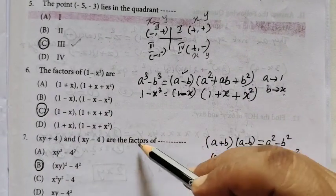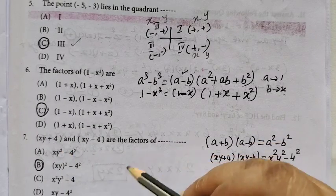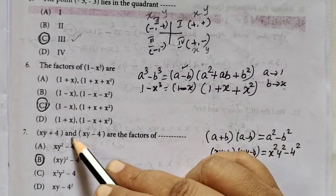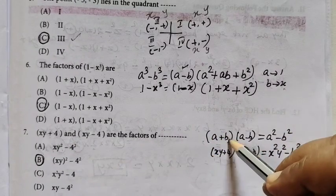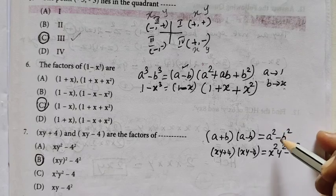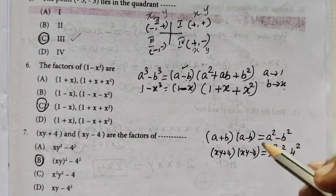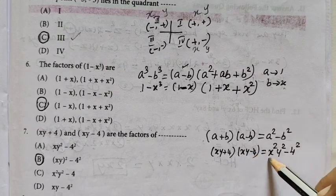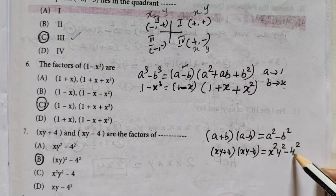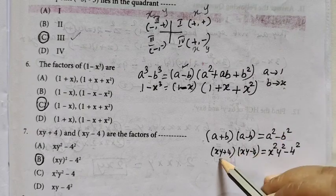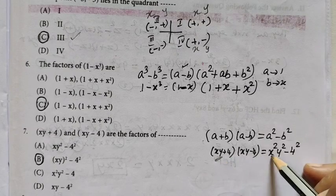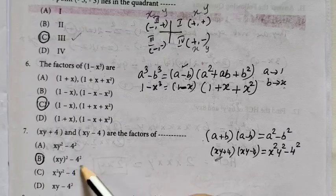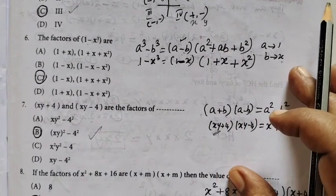Question 7: These are the factors of... The formula is (a + b)(a - b) equals a squared minus b squared. So (xy + 4)(xy - 4) equals xy squared minus 4 squared equals x squared y squared minus 16.